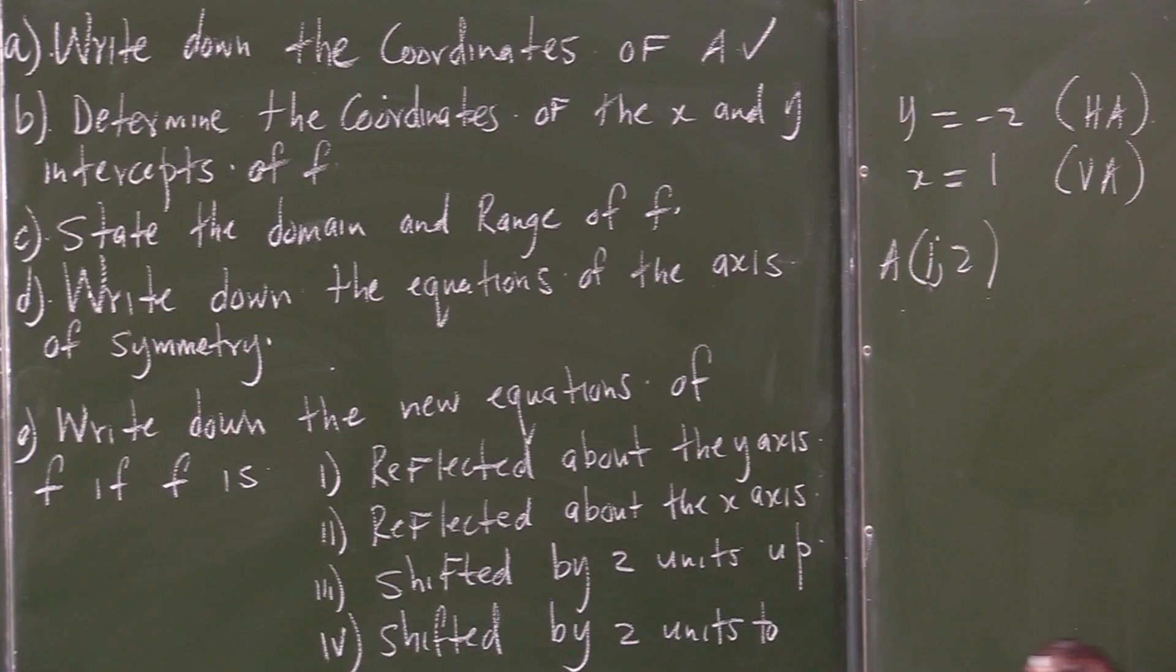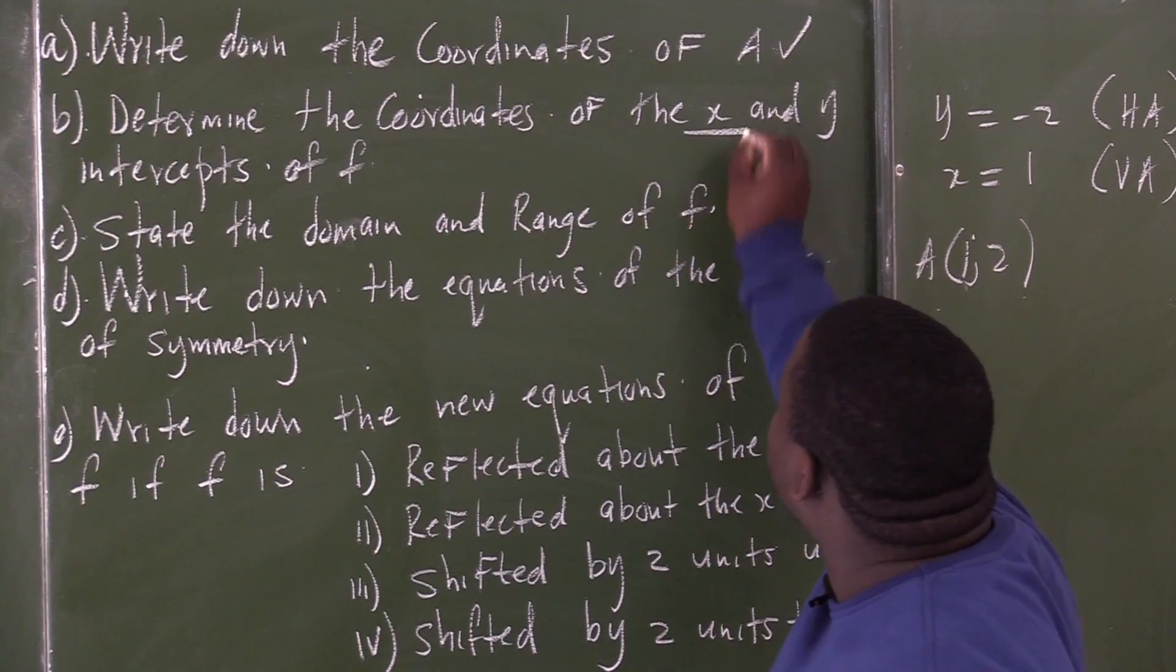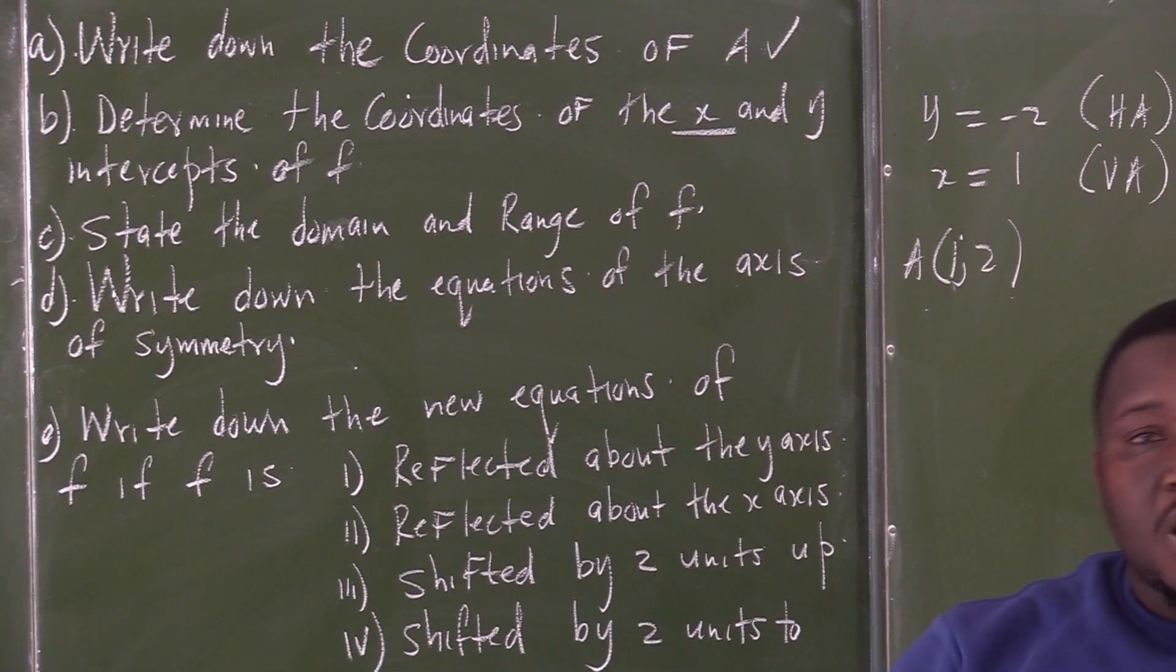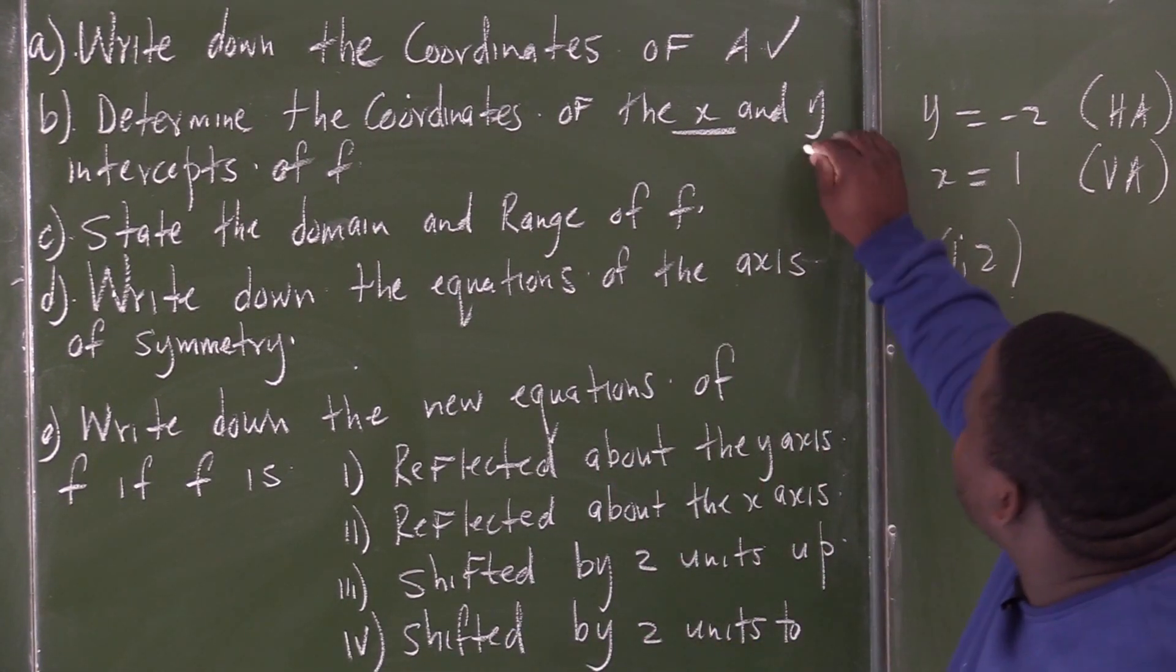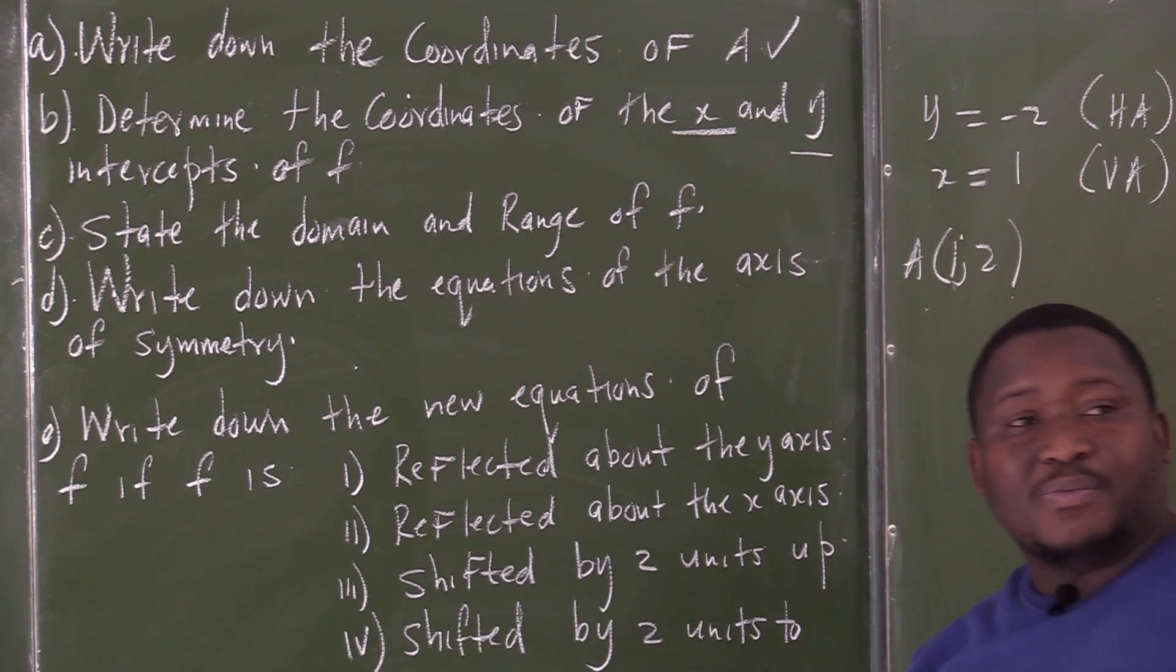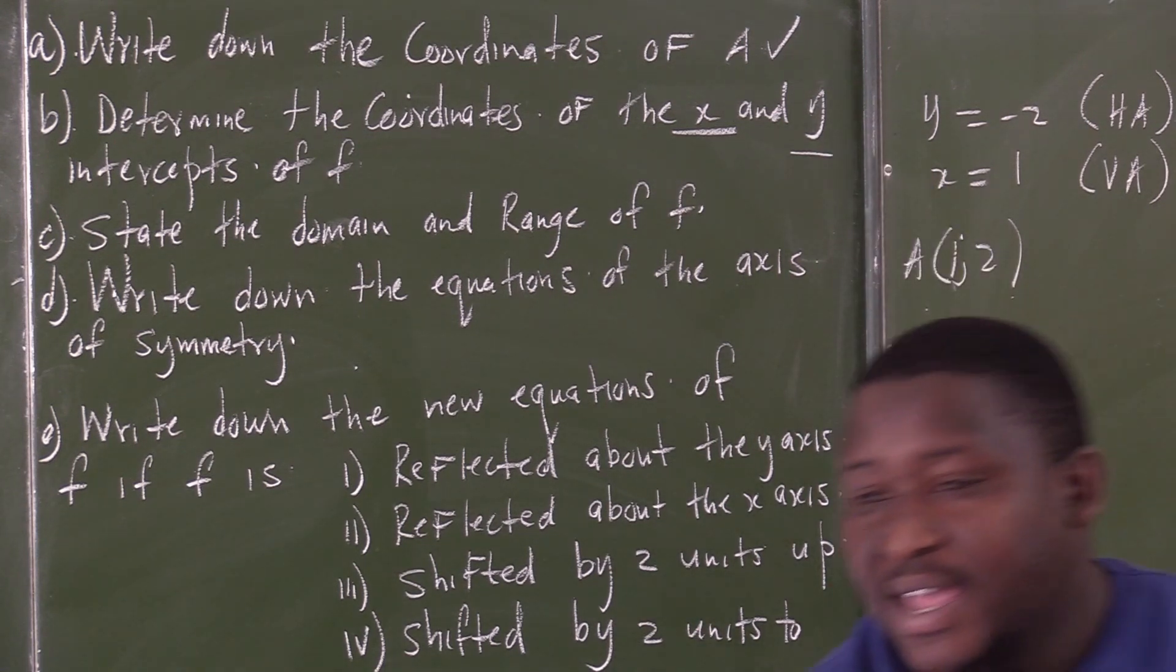Now, let's look at the second question. Every time the question says find the x-intercept, you always make y 0. Every time the question says find the y-intercept, you always make x to be 0.